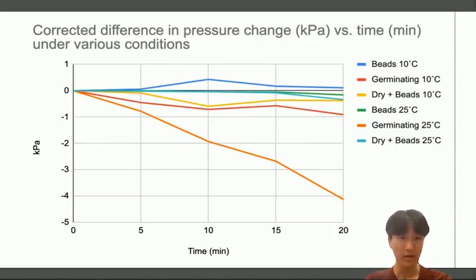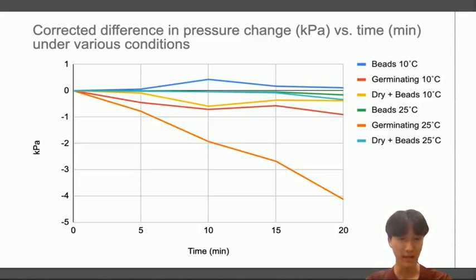However, the 10-degree beads experience a slight increase in kPa. One possible reason could be that the beads might not have been maintained at 10 degrees throughout the whole experiment and were allowed to come to room temperature. The increased temperature would increase the pressure, according to PV = NRT. The 25-degree beads, on the other hand, decrease slightly in pressure. One reason for this could be that some gas leaked out of the test tube, lowering the pressure of the system.